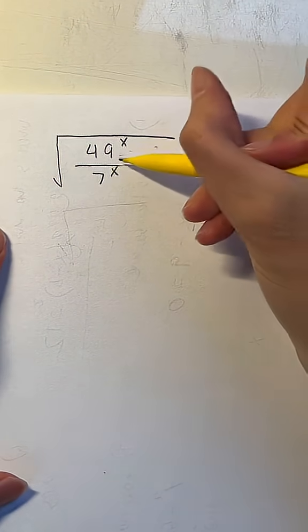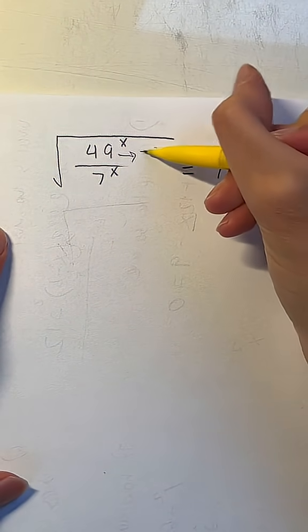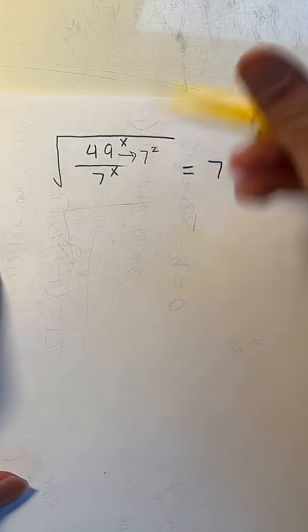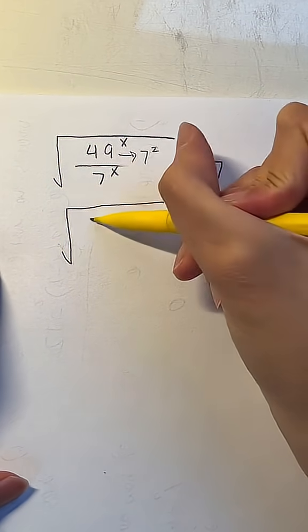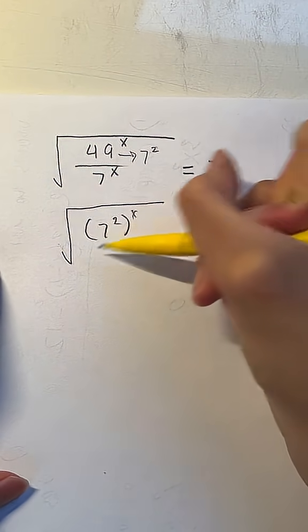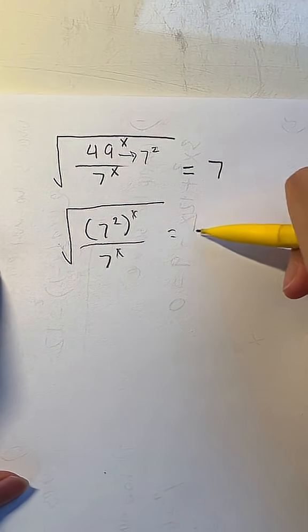And this actually works out perfectly because 49 could be rewritten as 7 squared. So if we replace that value into the equation, that's going to be the square root of 7 squared raised to the x power divided by 7 to the x power is equal to 7.